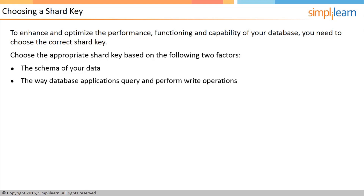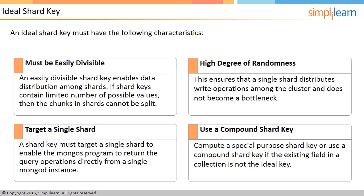An ideal shard key must have the following characteristics. First, it must be easily divisible. An easily divisible shard key enables MongoDB to perform data distribution among shards. If shard keys contain a limited number of possible values, then the chunks in shards cannot be split. For example, if a chunk or a range represents a single shard key value, then the chunk cannot be split even if it exceeds the recommended size.